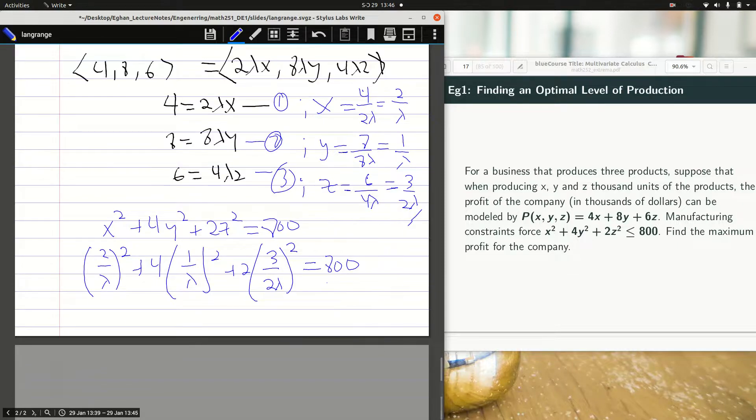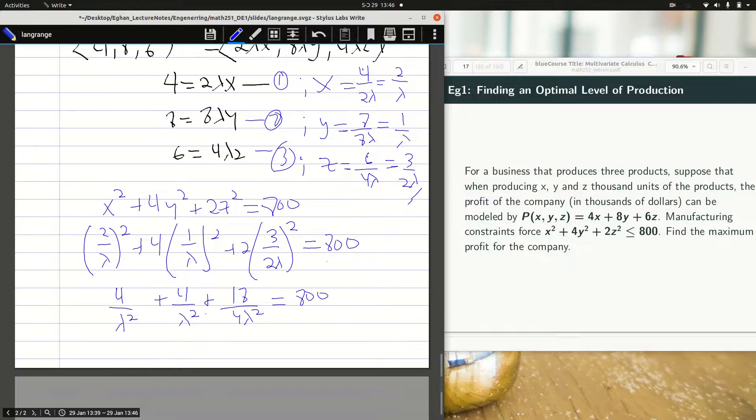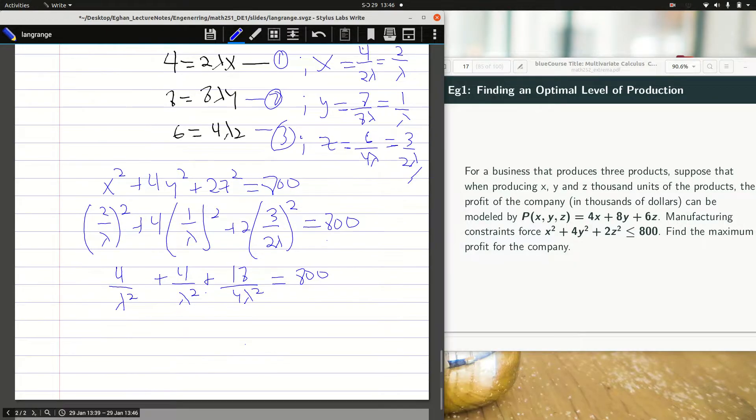I'm getting 4 over lambda all squared plus 4 over lambda all squared plus 9 over 18 over 4 lambda all squared is equal to 800. After expansion, we simplify as I can quickly factorize 1 over lambda all squared out and then have 4 plus 4 plus, you know this can have some divisions going on to be 9 over 2, is equal to 800.